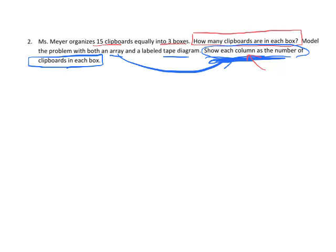So let's address this. Let's do this problem. First, it says let's model it with an array. So it says we're going to organize 15 clipboards equally into three boxes, and they want each column to represent the number of clipboards in each box. So that kind of means each column represents each box, right? And so I'm just counting, and I've got 1, 2, 3, 4, 5, 6, 7, 8, 9, 10, 11, 12, 13, 14, 15. So there's my 15 clipboards arranged into three boxes.